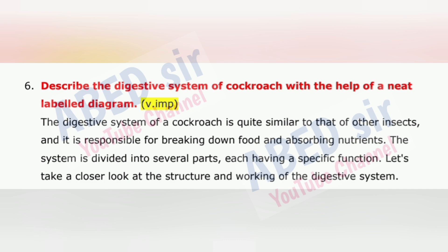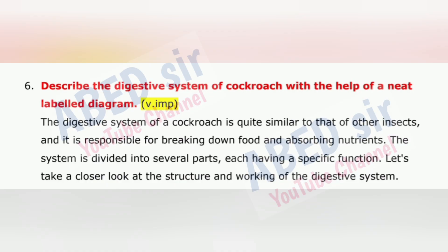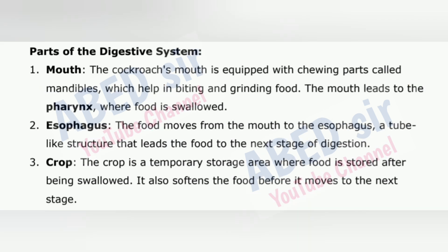Next important question is 6: Describe the digestive system of cockroach with the help of a neat labelled diagram. The digestive system of a cockroach is quite similar to that of other insects and it is responsible for breaking down food and absorbing nutrients. The system is divided into several parts, each having a specific function. Parts of the digestive system: 1. Mouth — The cockroach's mouth is equipped with chewing parts called mandibles which help in biting and grinding food. The mouth leads to the pharynx where food is swallowed. 2. Esophagus — The food moves from the mouth to the esophagus, a tube-like structure that leads the food to the next stage of digestion.